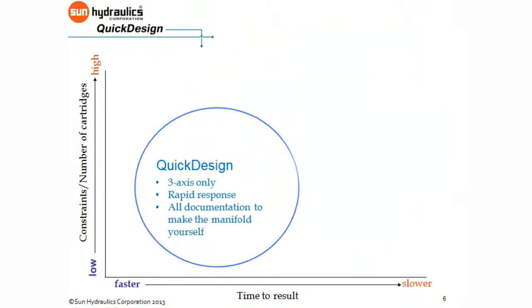Quick Design is built on speed. Designs are delivered rapidly and include everything you need to manufacture the manifold yourself or order the assembly through your Sun Distributor.